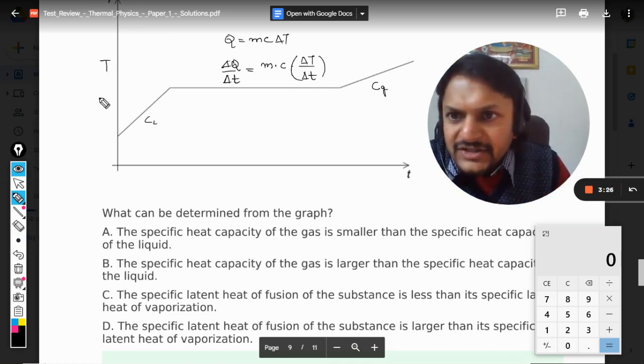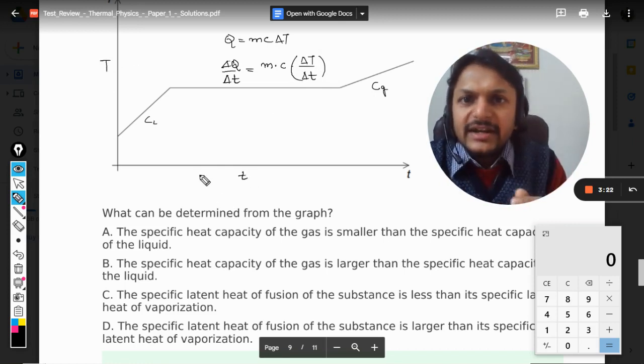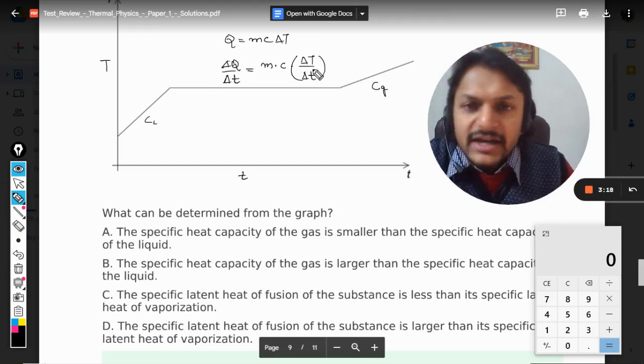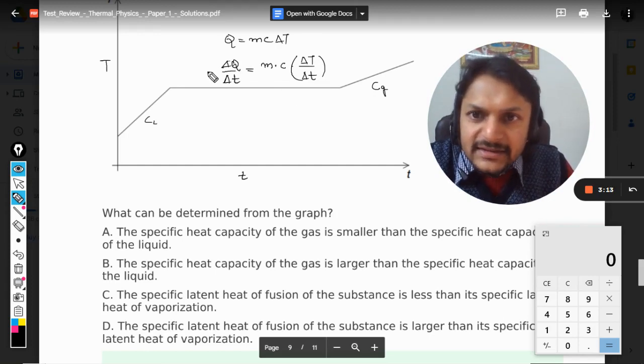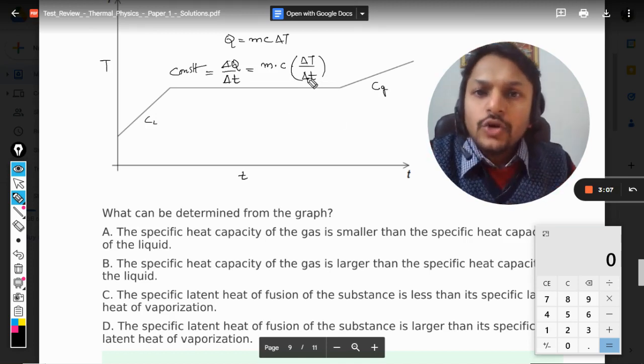Because on the y-axis you have capital T, on the x-axis you have small t. So the gradient or the slope or the inclination of this line is given by delta T by delta t. Now this becomes a constant because it is not going to change for liquid as well as for gas.